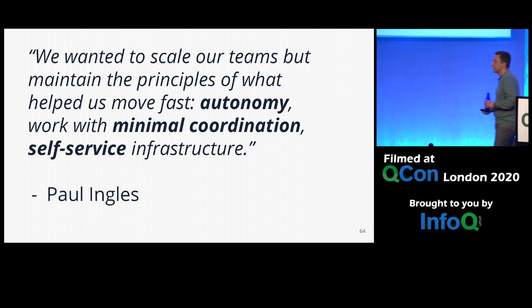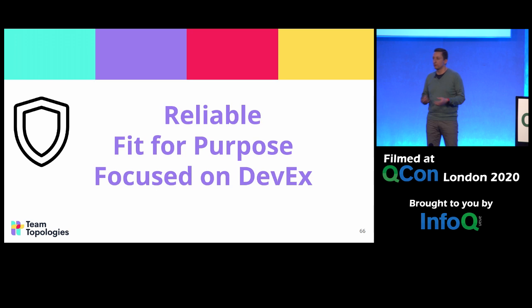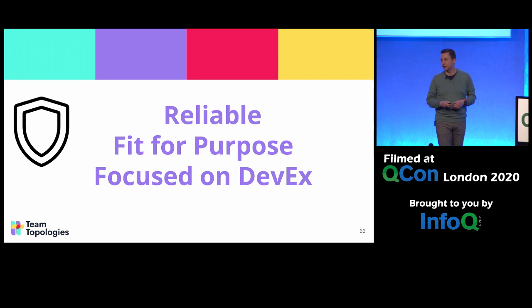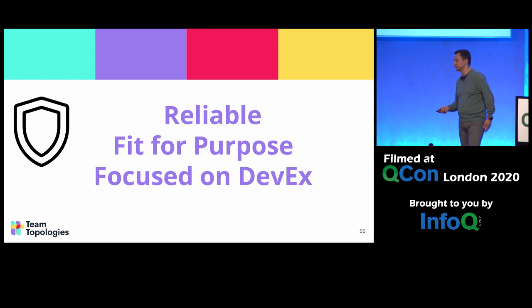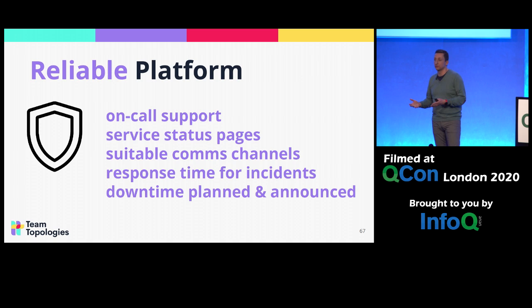Paul Ingalls also said they wanted to keep the principles they had from the beginning: to promote autonomy of teams, reduce the amount of coordination needed, and provide a self-service type of infrastructure platform. We talked about treating the platform as a product — internal, but still a product. So what does that mean more specifically? We should think about the reliability of the platform, whether it's fit for purpose, whether it's actually helping with the problems that engineering teams have today, and whether it focuses on the developer experience as a key driver.